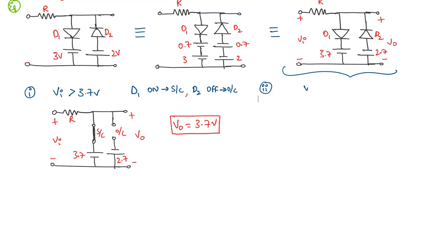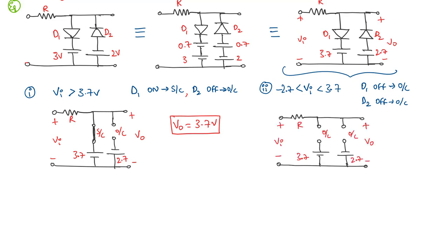For Case 2 where Vi is between minus 2.7 and 3.7 volts: D1 is off (open circuit) and D2 is also off because it is reverse biased, since Vi is always greater than minus 2.7V. With both diodes acting as open circuits, no current flows through the resistor, so the output voltage equals the input voltage — V0 equals Vi.